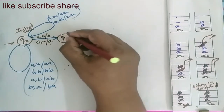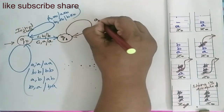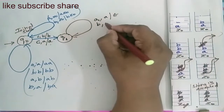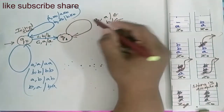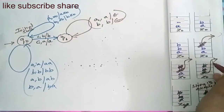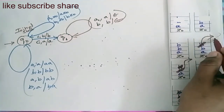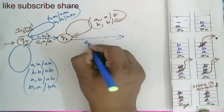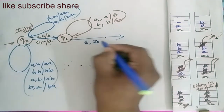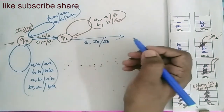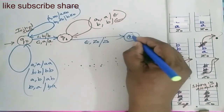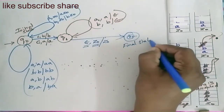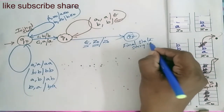At state Q1, when you come across A, A should be popped outside the stack. When you come across B, B should be popped outside the stack. When you come across epsilon and encounter Z-naught in the stack, Z-naught is maintained as such, and you reach state Q2, which is the final accepted state where the string has been accepted.